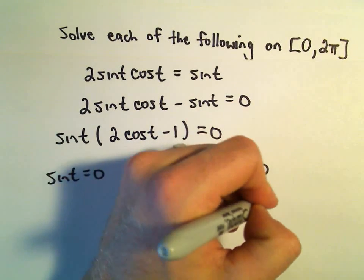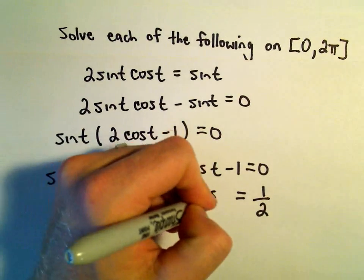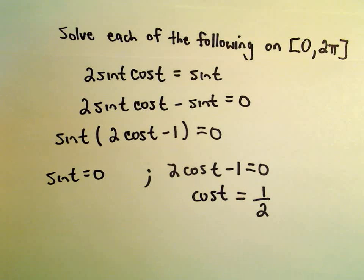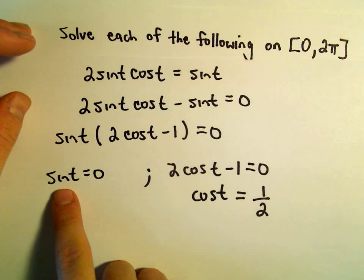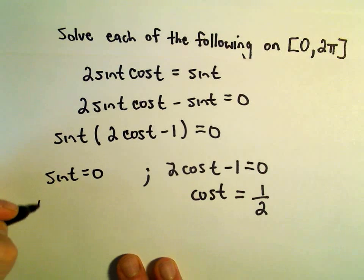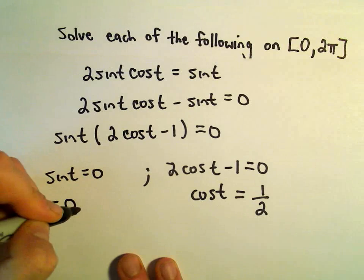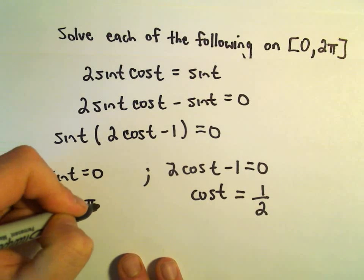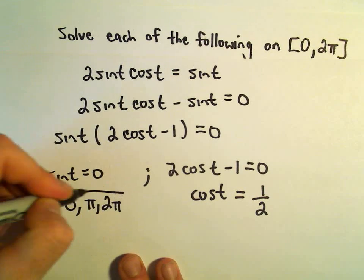Well, we can add 1 and divide by 2. So now we're just thinking about solutions. Okay, where does sine of t equal 0 on the interval 0 to 2 pi? Well, that would happen at the angle 0, at the angle pi, and at the angle 2 pi.